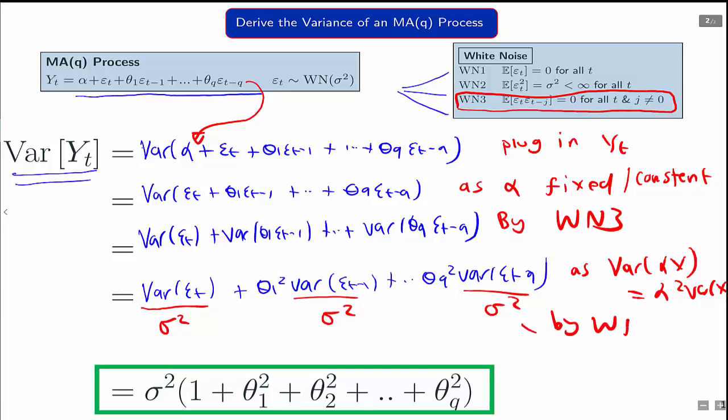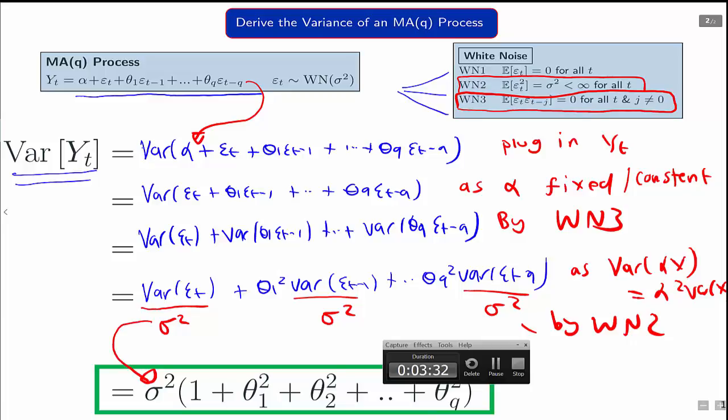So then it comes out. We can then take sigma squared outside, and we'll get the expression below. So by white noise 2, that all the variances are equal, we then get the desired result. Take out sigma squared.